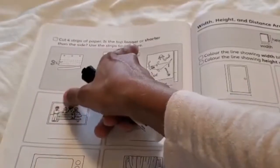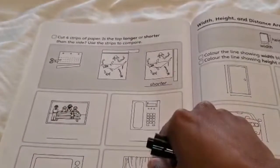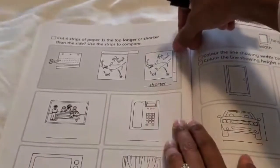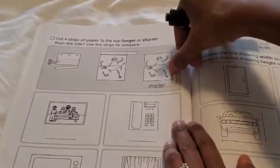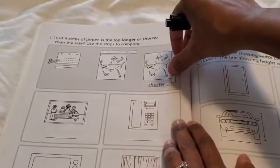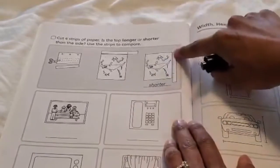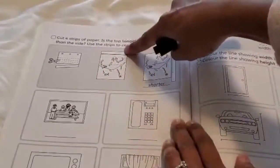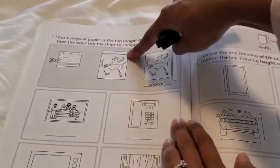Was the top longer or shorter? The top was shorter because look over here, this is where the line was for the top, but there's all this extra space still here. So that means that the top is shorter than the side.